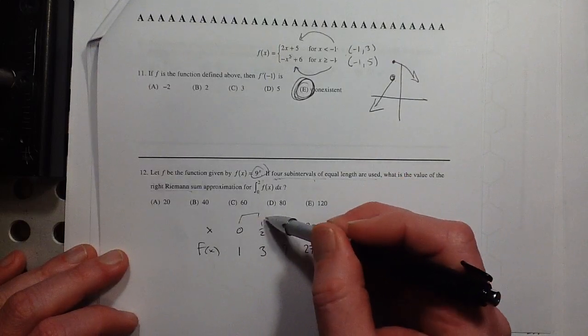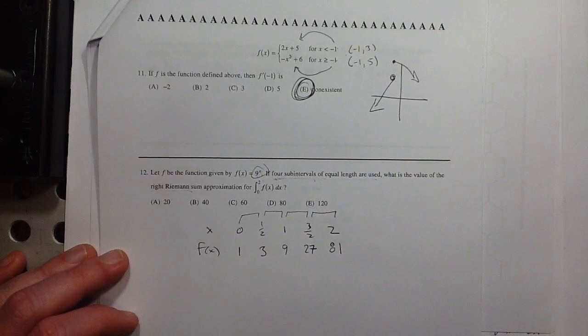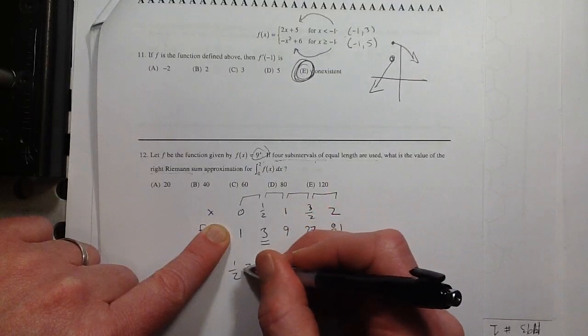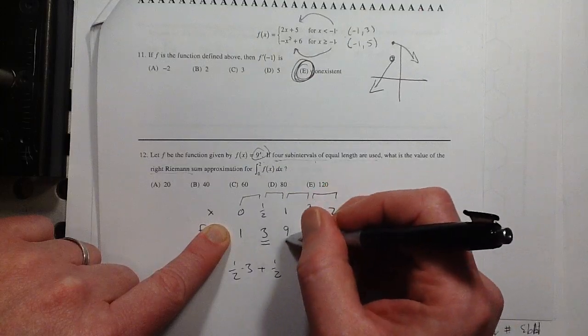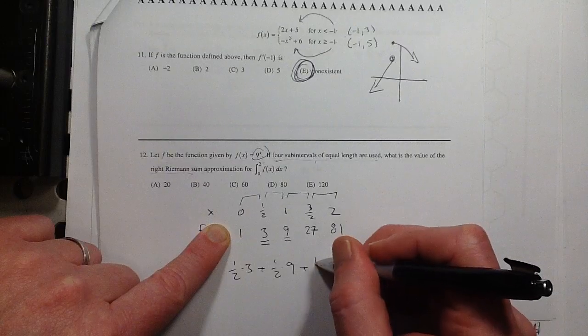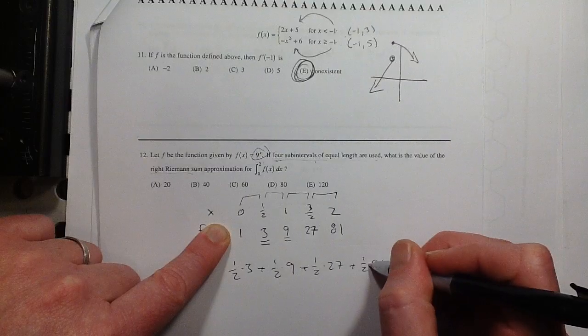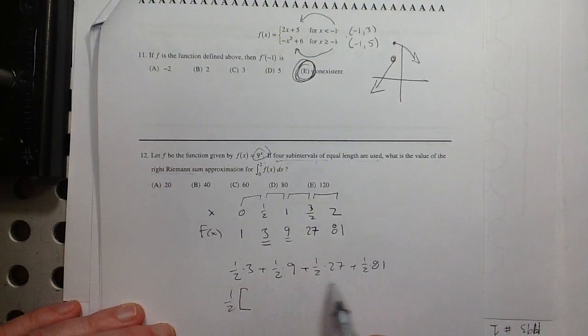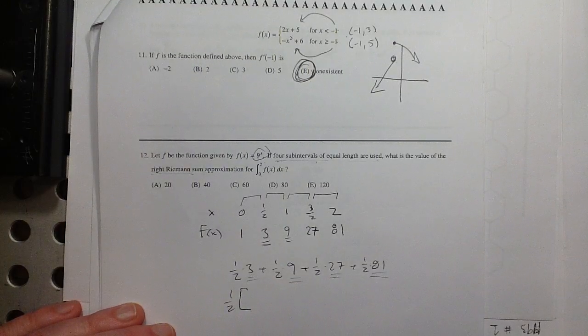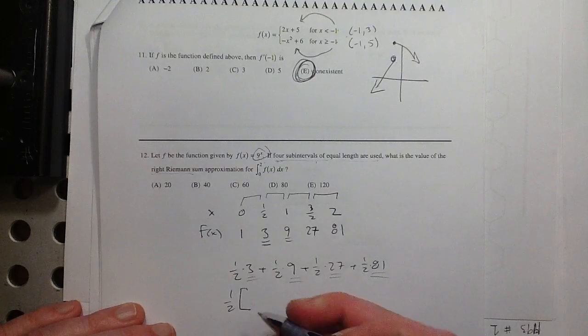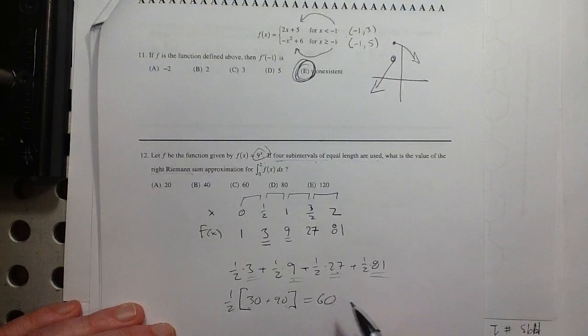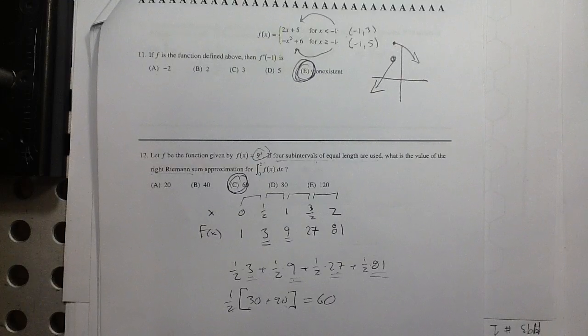So we want to do a right Riemann sum. So that means I'm going to use, here's my four subintervals. Riemann sum is just rectangles. So the first rectangle is 1/2 wide times 3 high, because this is the right endpoint, plus 1/2 wide times 9 high. They're asking us to do this without a calculator, but it's not really that bad, especially if you factor out the 1/2, and then you just have, what's 3 plus 9 plus 27 plus 81? If you're clever about that, you could do 3 plus 27, that's 30, 9 plus 81 is 90. So that's 120, half of that is 60.